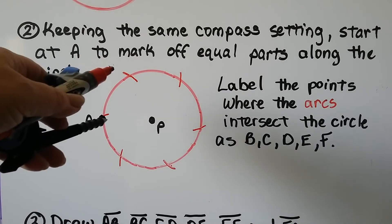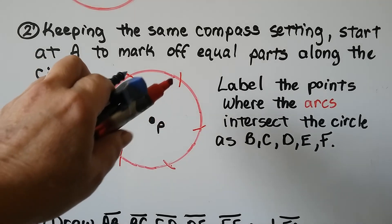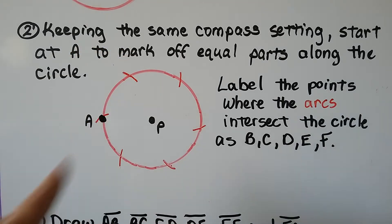At A, we mark off equal parts along the circle. So we put our point on A and make a little arc, put our point on that intersection and make a little arc, put our point on that intersection and make a little arc, and we do it all the way around. We can label the points where the arcs intersect the circle as B, C, D, E, and F.